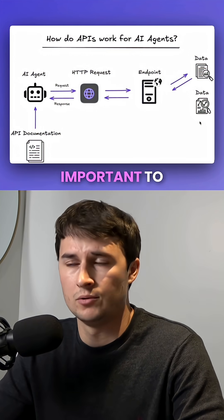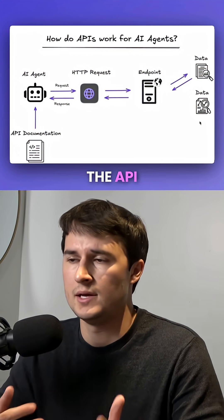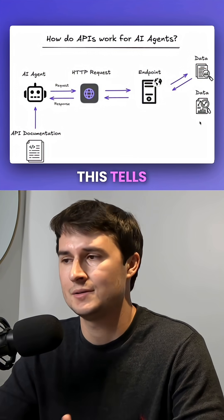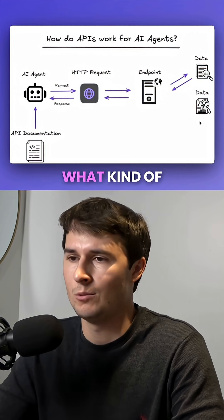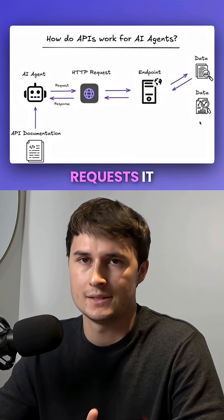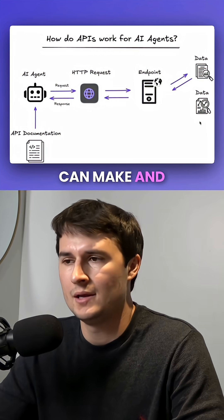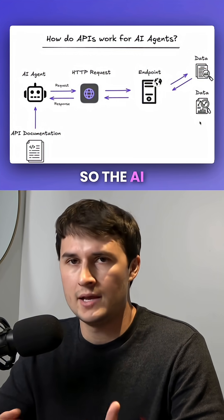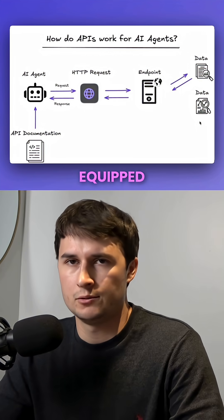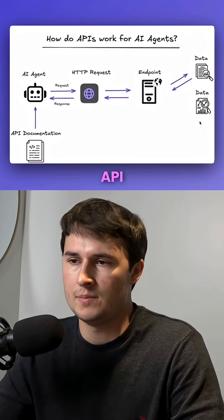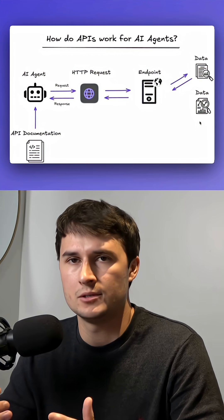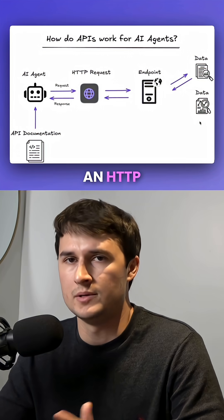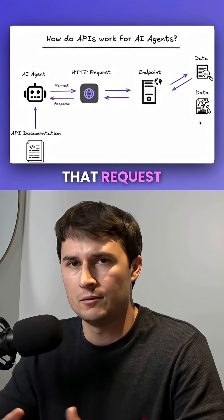First, it's really important to understand the API documentation — this is like the menu. It tells the AI agent what kind of requests it can make and what information it can expect back. The AI agent, once equipped with that API documentation, will create an HTTP request and send it out.